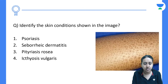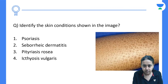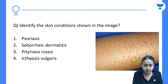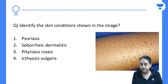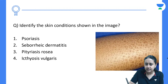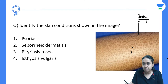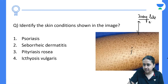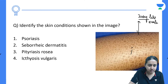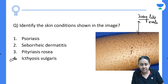Next question: identify the skin condition shown in the image — psoriasis, seborrheic dermatitis, pityriasis rosea, or ichthyosis vulgaris? It is a very classical image of dry, scaly, fishy skin with fish-like scales. The answer is ichthyosis vulgaris.